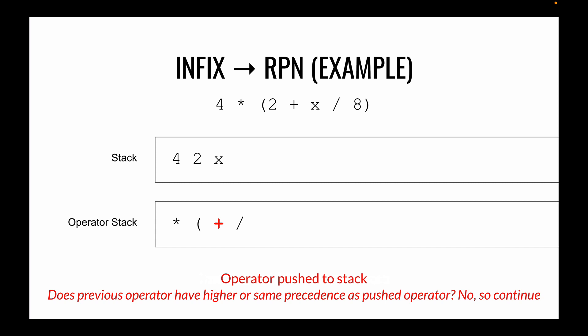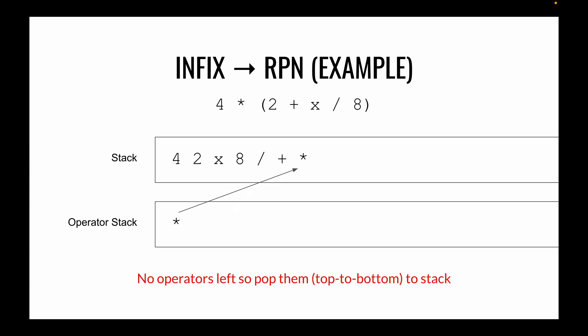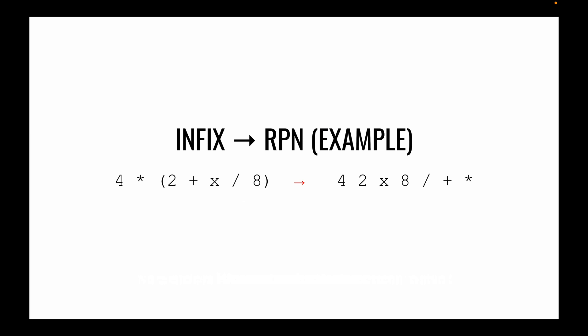Along the way, we need to ask: does the previous operator have the same or higher precedence than the one we just added? If the answer is no, we just continue on. In this case, plus does not have higher or equal precedence to division, so we continue and add eight to the stack. Now we've reached a closing bracket, so anything within those brackets needs to be popped top to bottom and pushed onto the stack. We've reached the end of our expression and there's only one thing left on the operator stack, so we pop that and push it onto the stack. Our final expression should resemble the RPN expression shown on the right.